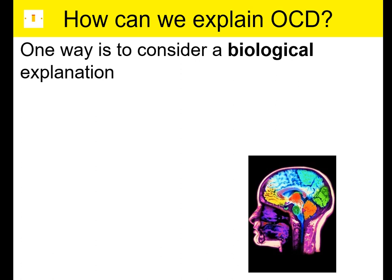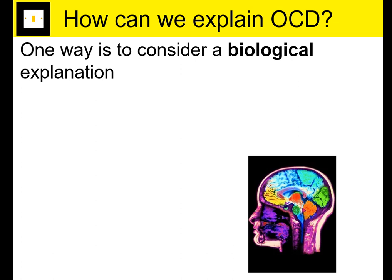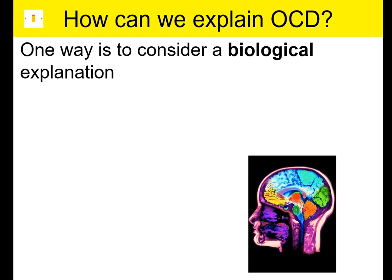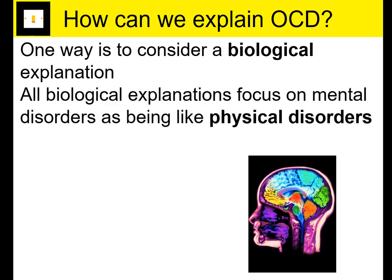One way of explaining OCD is through a biological explanation. You've already looked at the psychological approaches. A biological explanation is anything that is internal within the person — that could be the brain, genetics, or anything physical. Sometimes it's referred to as a physiological explanation, which you might see in textbooks. The idea here is that all mental disorders are viewed as being like a physical disorder — this is the medical view, the medical model. A doctor would always want to look for something physical that was at fault and could be changed.